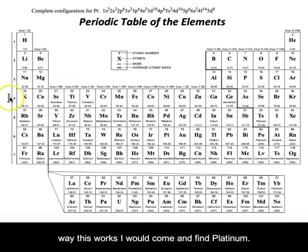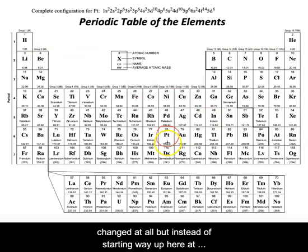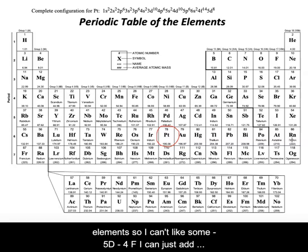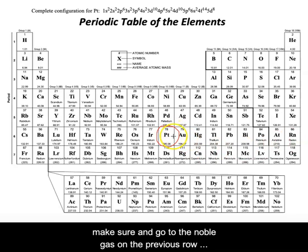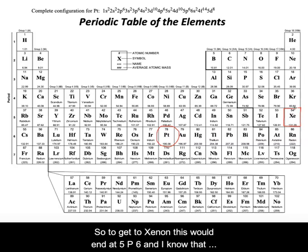The way this works: I would come and find platinum — platinum is still number 78, that hasn't changed. But instead of starting way up here at hydrogen, I'm going to go to the closest previous noble gas. You can't just go to the end of the row because there's no way to subtract elements — I can only add elements. So you've got to make sure and go to the noble gas on the previous row. That means, in this case, xenon, which would end at 5p6.